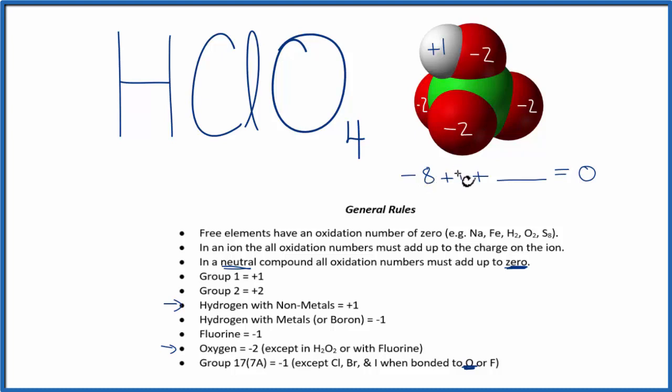So minus eight and one, that's minus seven. So the oxidation number on the chlorine, it has to be a positive seven for this to all add up to zero. So the oxidation number on the chlorine is plus seven.